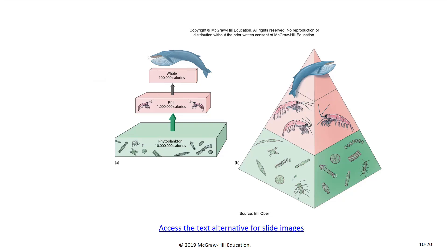For example, if phytoplankton generate 10 million calories of primary production and the krill, which feed directly on the phytoplankton, produce 1 million calories, then whales are only going to have 100,000 calories in their biomass — again, for every 10 million calories made by the phytoplankton. So this is our energy pyramid.